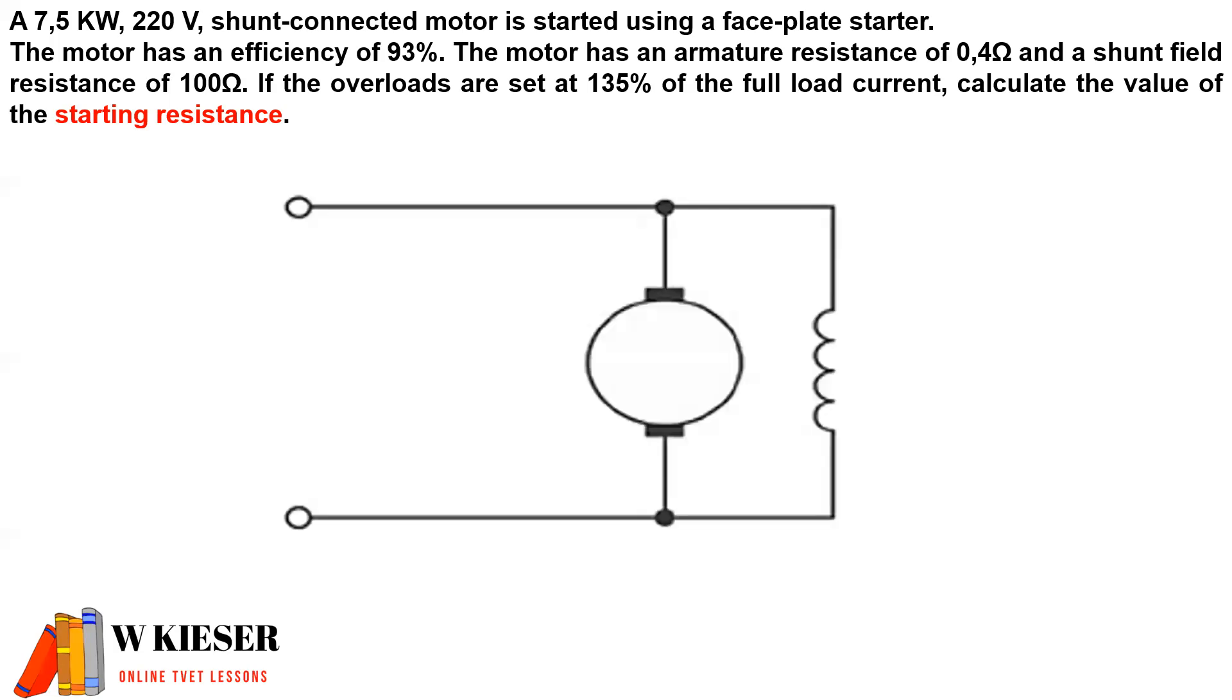Before we start the calculation, a quick reminder for a shunt connected motor. The field winding is connected in parallel to the armature. Current is drawn from the supply. The armature draws armature current and a small amount of current goes through the shunt winding. We have some armature resistance inside the armature and our shunt resistor is called our shunt.